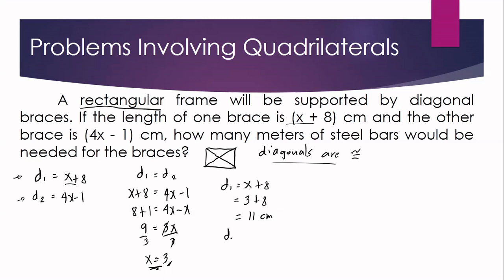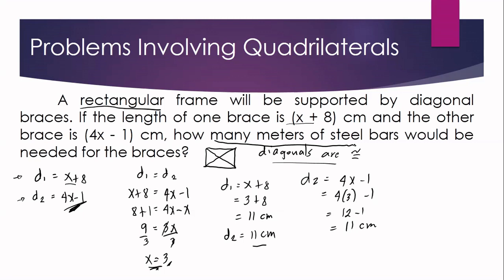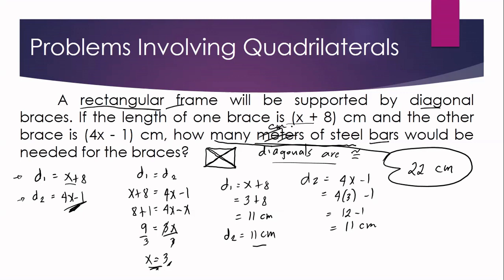Since the diagonals are congruent, diagonal 2 is also 11 centimeters. To verify: diagonal 2 equals 4x minus 1, substituting x equals 3 gives 12 minus 1, which is 11 centimeters. Knowing both diagonals are 11 centimeters each, you will be needing 22 centimeters of steel bars to support the rectangular frame with diagonal braces.